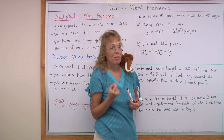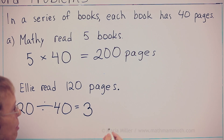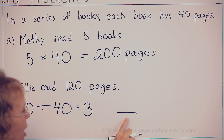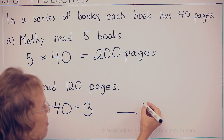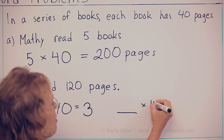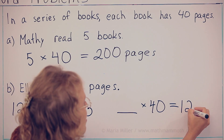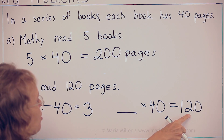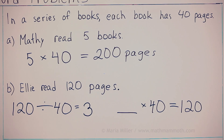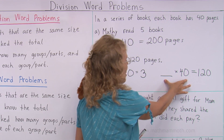I can also write a multiplication this way. In this multiplication, I would not know how many books there are, so I leave that empty — it's my unknown. Then blank times 40 pages equals 120 pages. I know the total, so I write the total here, and then three goes in the blank. This would be a missing factor problem — one of the numbers we multiply is missing.